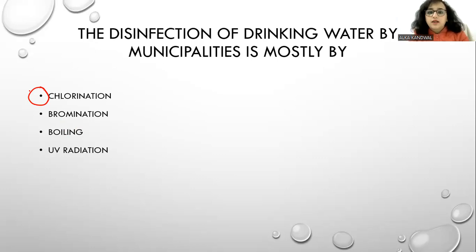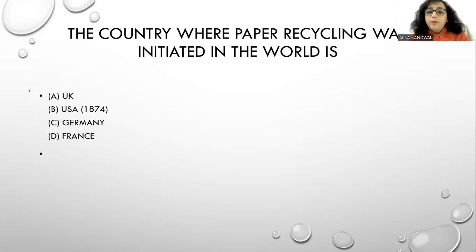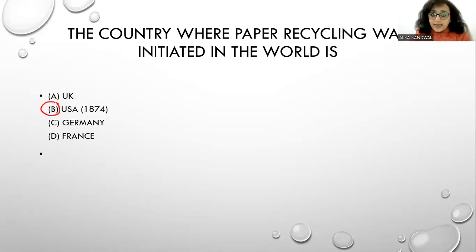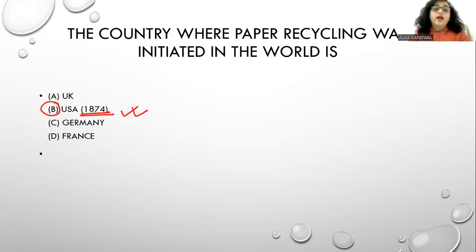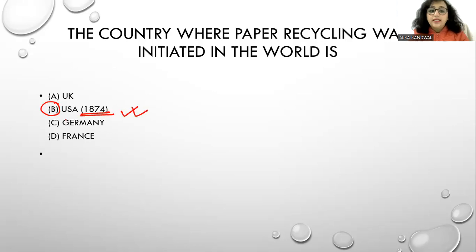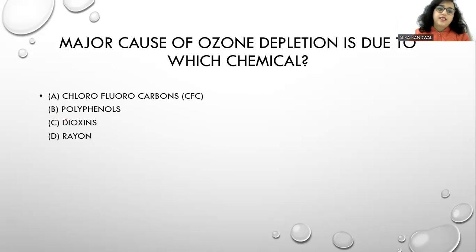The country where paper recycling was first initiated in the world is the USA, in 1874. The major cause of ozone depletion is chlorofluorocarbon (CFC) — remember the full form: chlorofluorocarbon.